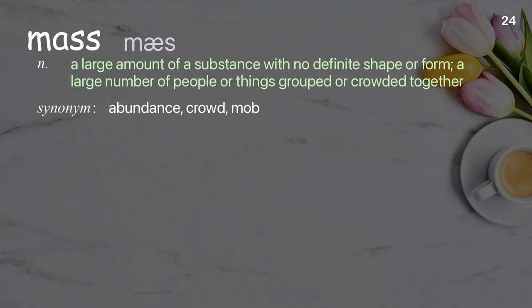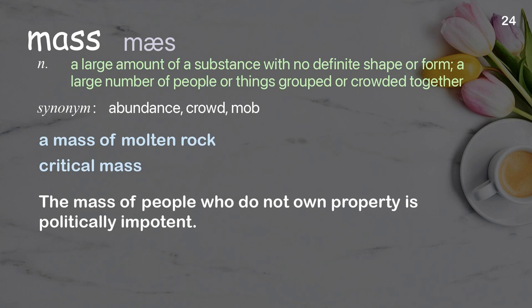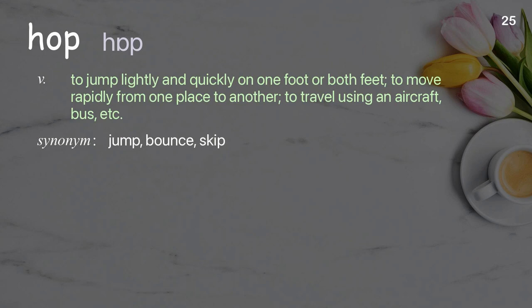Mass: A large amount of a substance with no definite shape or form; a large number of people or things grouped or crowded together. A large number of people who do not own property is politically impotent.